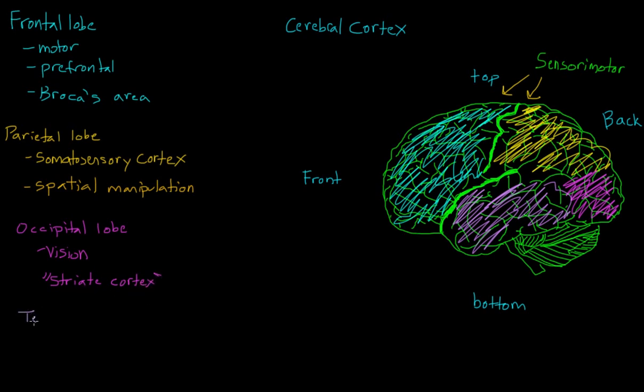The last lobe of the brain is the temporal cortex, and that's in violet. This is the part of your brain responsible for auditory processing. As was the case with vision in our occipital lobe, information comes in through our ears, but it is processed in our brain, in our temporal cortex.